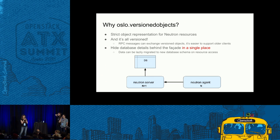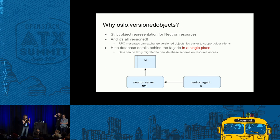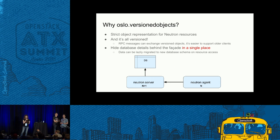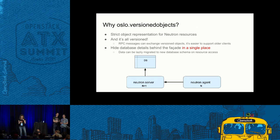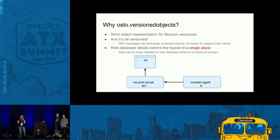First of all, Oslo Versioned Objects enables you to have a strict representation of your data. For example, if you have a network, you can define all the fields of the network object. When you modify it — like adding or removing a field — you have a version, and this is very important. When you upgrade the Neutron server, the agent, which is the client side of the RPC, is still using the older version. Right now in Neutron, we have no way to version the data that we exchange over RPC.